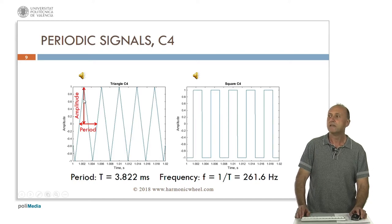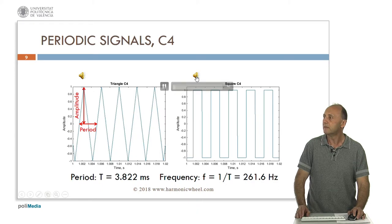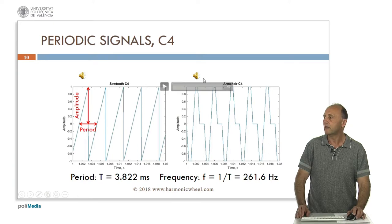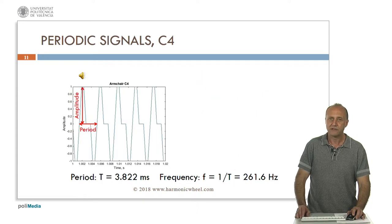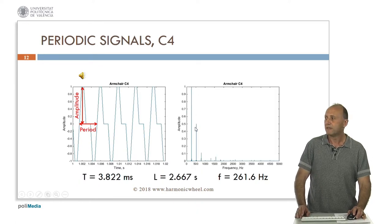Now let's consider other periodic signals. Some of them very simple, such as the triangle — this is a C4 — a square, the sawtooth, and now a bit more complex signal developed by me which I call armchair. Let's listen to its sound. Let's consider the last one as a reference to obtain the spectrum.